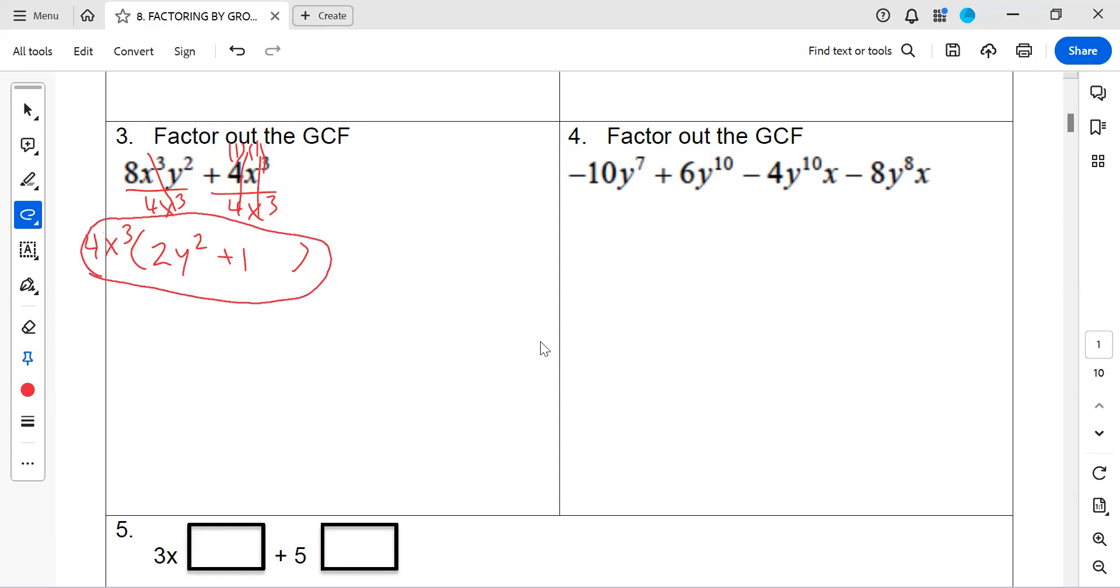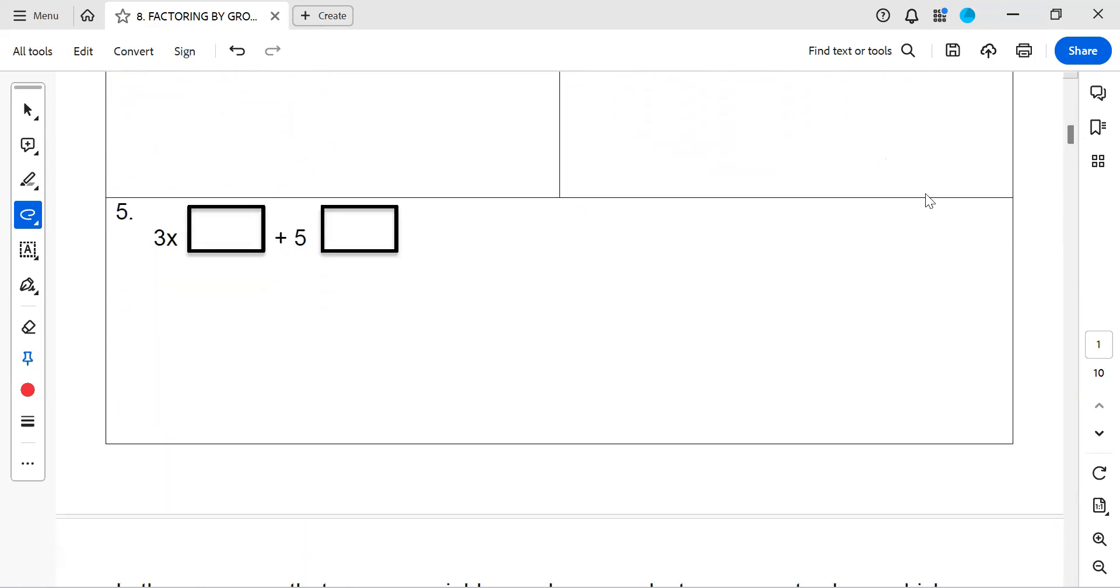Now again, these problems should be pretty smooth to understand because they are from the previous lesson. If they're not, I recommend you complete the previous lesson on greatest common factor before you tackle these. All right, four we're actually going to save, but I actually want to jump to five right now.